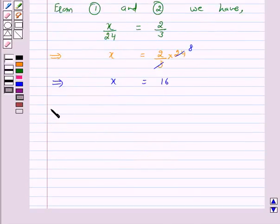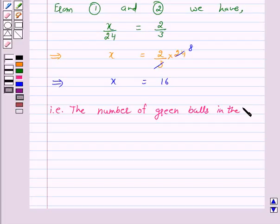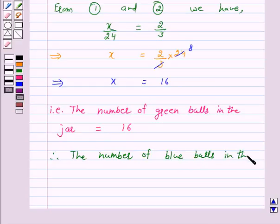That is the number of green balls in the jar is equal to 16. Therefore the number of blue balls in the jar is equal to 24 minus 16, which is equal to 8.